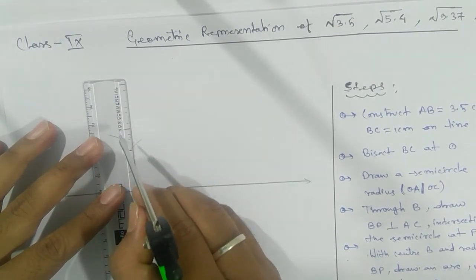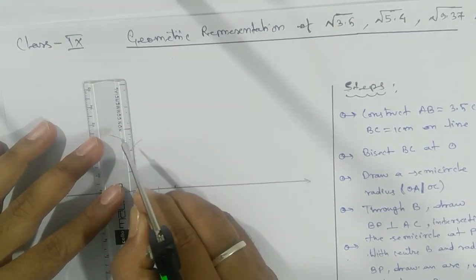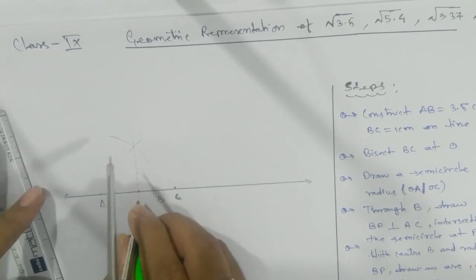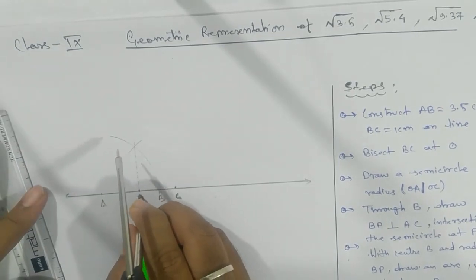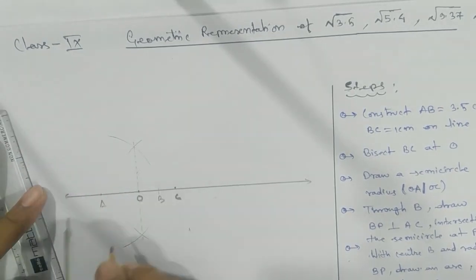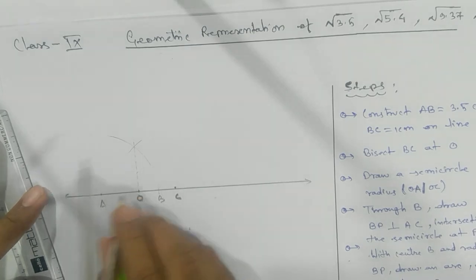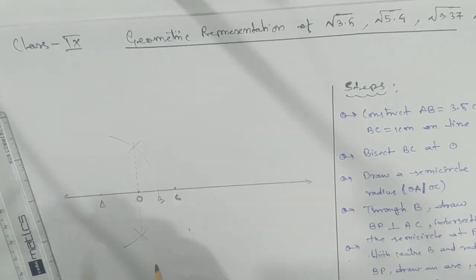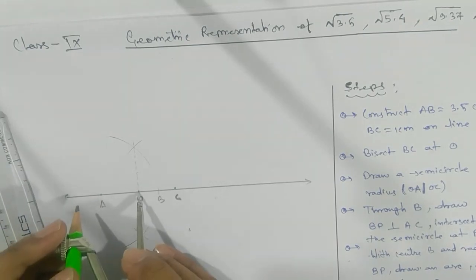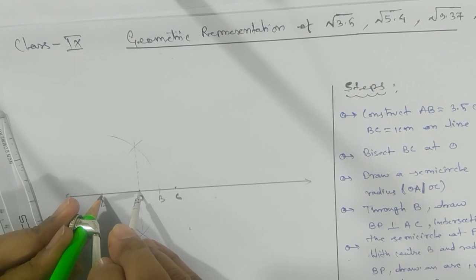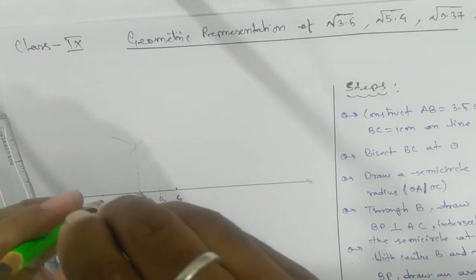O divides AC into two equal parts. Okay, now take OA or OC as a radius. Draw a semicircle. After that...